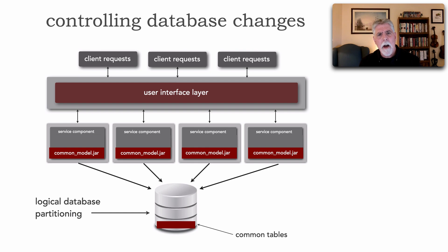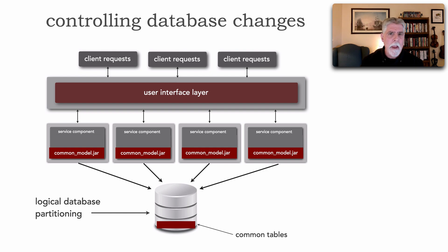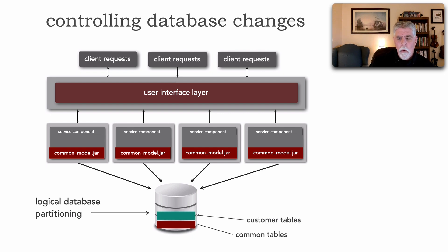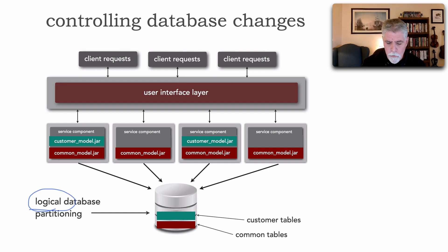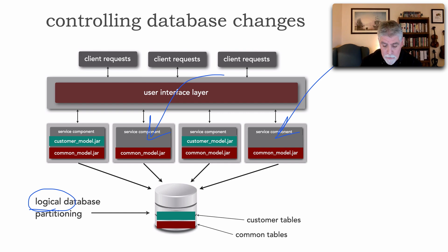This is a lot of times unavoidable, especially for very common tables like an audit table or a primary customer table that everybody needs. However, we try to control change within that specific domain. We continue to partition and find customer-related tables, so we put those in a shared library. It turns out only the first and third services need those — the second and fourth services actually do not need any of those customer tables; there's no SQL or anything involved with those tables.